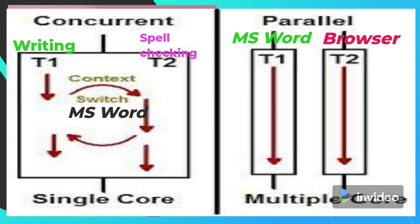But let's say in parallel to writing you are also listening to YouTube or some music, or watching a movie in the background on a browser with continuous streaming — no buffering. The browser is continuously downloading the file while you listen. That needs another core to process the browser application. So Word and your browser are two applications running in parallel — they need a two-core system — while writing text and spell checking need only a single-core system with two threads doing context switching.